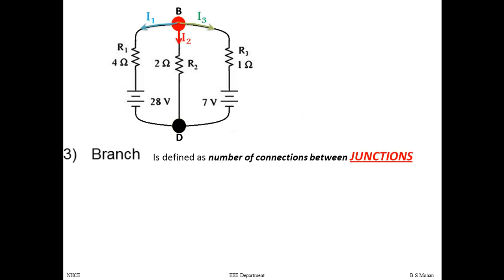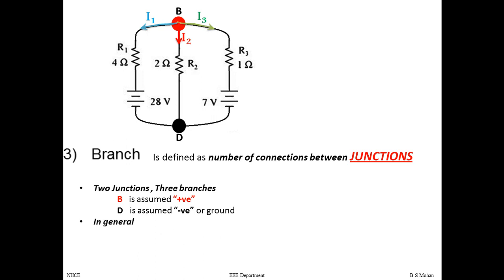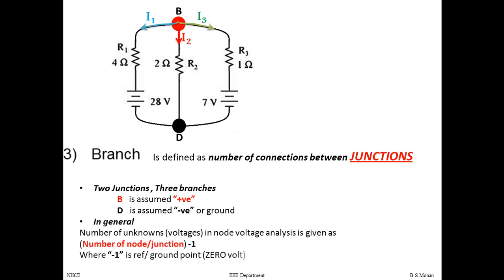We have two junctions, assumed B as positive and D as ground. In general, the number of unknown voltages in nodal analysis equals the number of junctions minus 1. Here that is 2 − 1 = 1 unknown, which is V1 at point B. The minus 1 accounts for the reference (ground) junction whose voltage is known to be zero. For three junctions there would be two unknowns, for four junctions three unknowns, and so on.